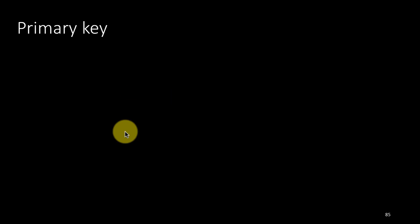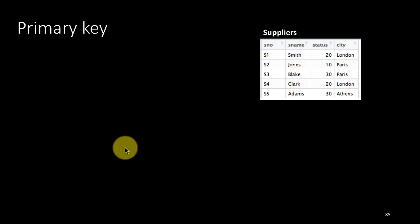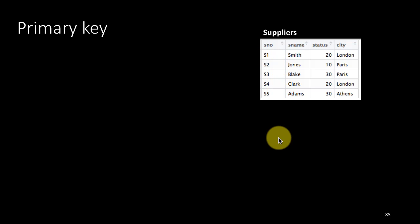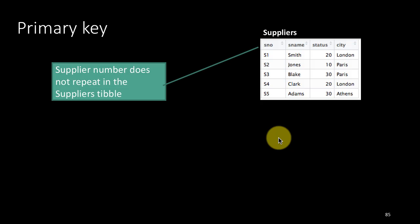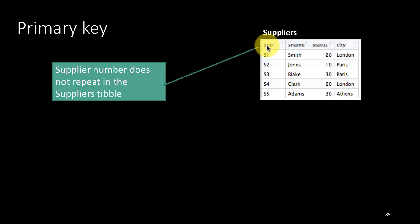When we talk about joins, we cannot avoid discussing the notion of what is called a primary key. Let's take a look at the suppliers table. In the suppliers table there's a column called supplier number and the supplier numbers are S1, S2, S3, S4, S5. The idea is that the supplier number does not repeat in the suppliers table. In that sense the column SNO is unique in the suppliers table.